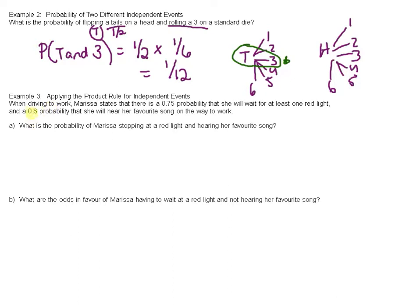Now, example three. When driving to work, Marissa states that there is a 0.75 probability that she will wait for one red light, and a 0.6 probability that she will hear her favorite song on the way to work. So probability of red light is 0.75, probability of favorite song equals 0.6.